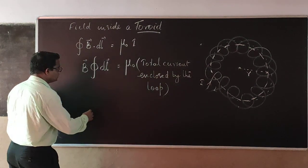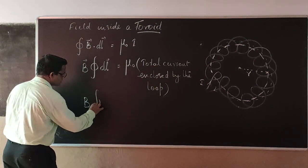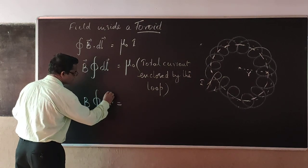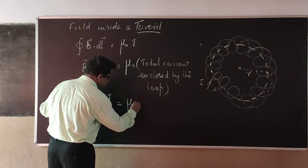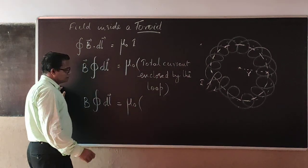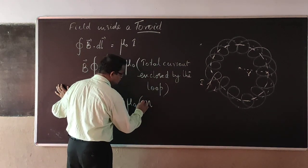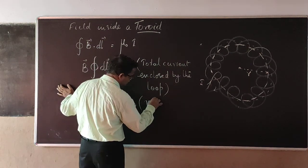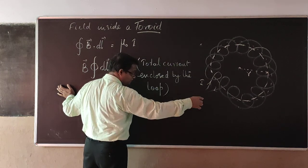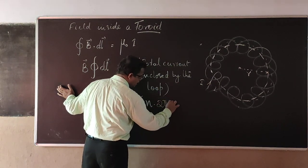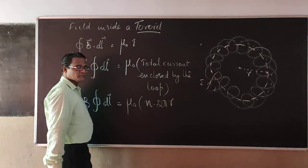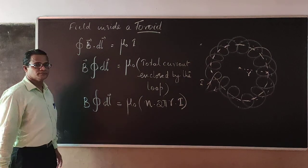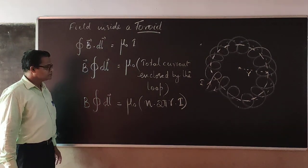Therefore, we can calculate the total current to be equal to μ₀ times small n. You know what small n is? Number of turns per length into the whole length of this solenoid, that is 2πR, into current I.